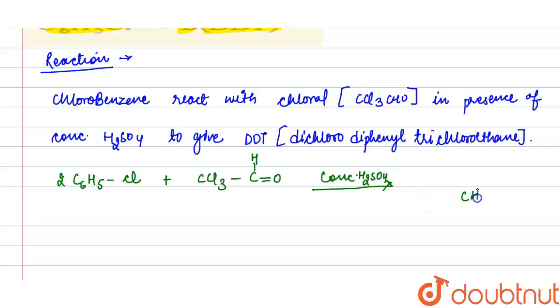Let's draw the structure. This is dichlorodiphenyltrichloroethane. Now here, compound A is chloral and compound B is DDT. Thank you.